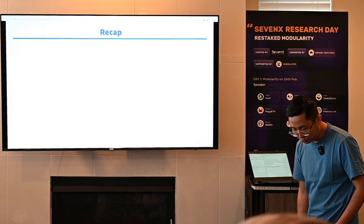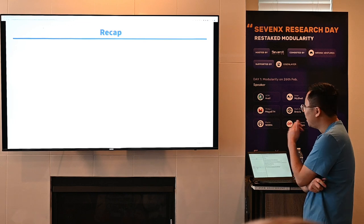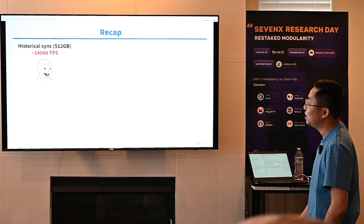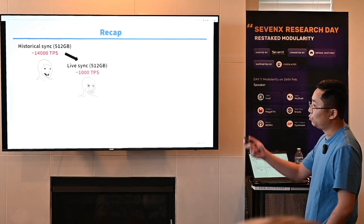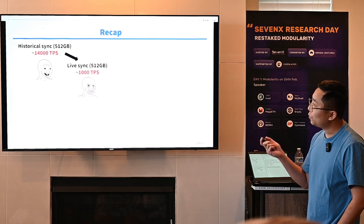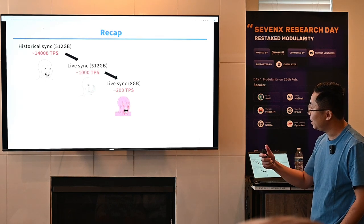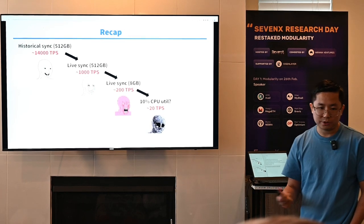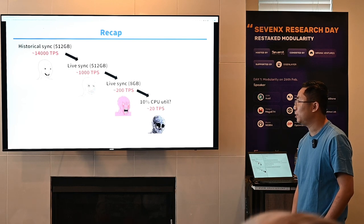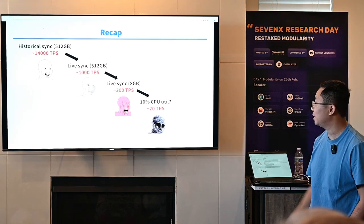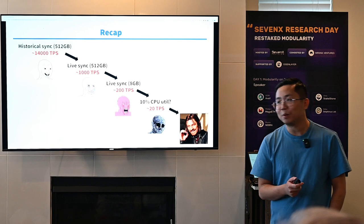Let's do a quick recap before going into part two. We start with a nice 14,000 TPS in historical sync. Adding merkleization in live sync drops it to 1,000 TPS. If we further limit memory to 8 gigabytes, we get only 200 TPS. And if full node operators are only given 10% CPU utilization, we're looking at maybe 20 TPS. Fortunately, we'll be able to do much better.